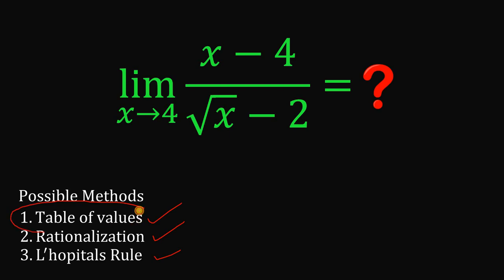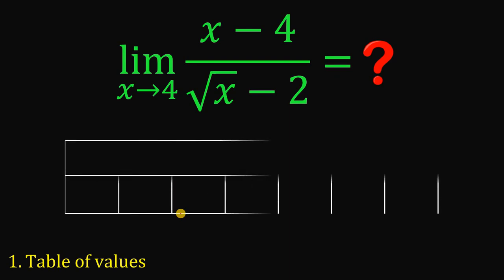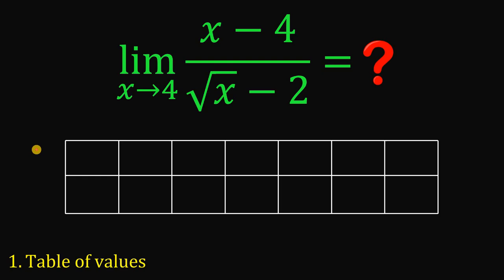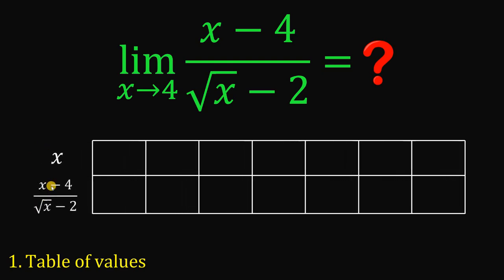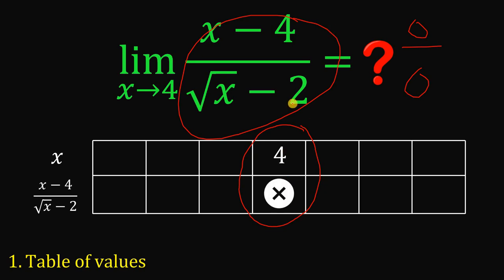Let's start with the first method: using the table of values. In the first column we have x, and on the other side we have the function x minus 4 over square root of x minus 2. Now, in the middle of this table we put 4, because x must be approaching 4. But if we plug in x equals 4, we get 0 over 0 — indeterminate — so we don't get any value.